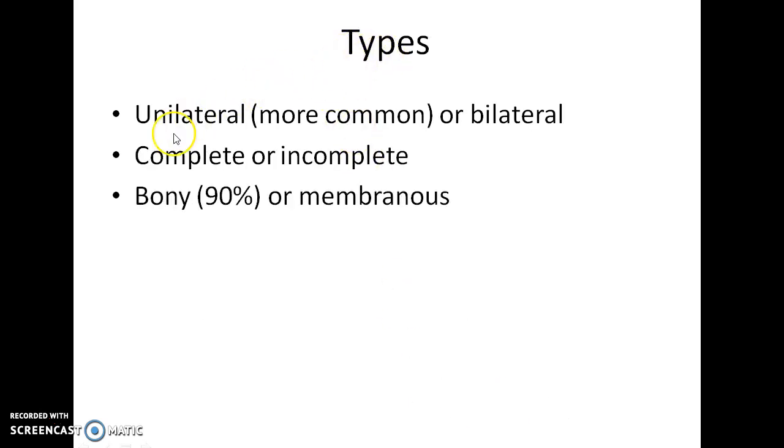What are the types of choanal atresia? Choanal atresia can be unilateral or bilateral, complete or incomplete, bony or membranous.